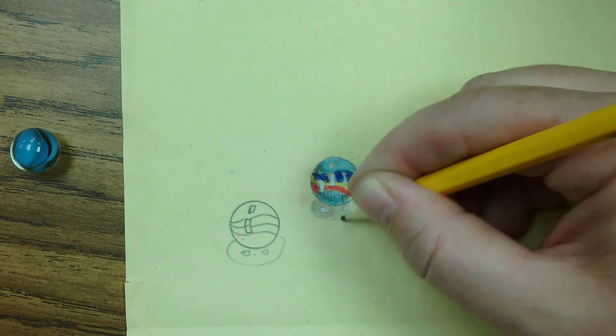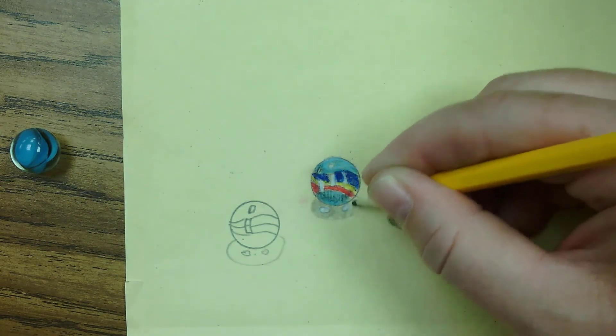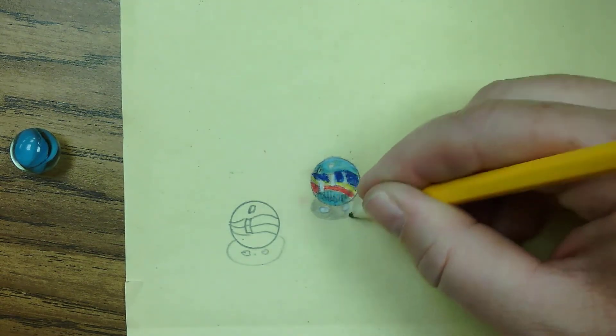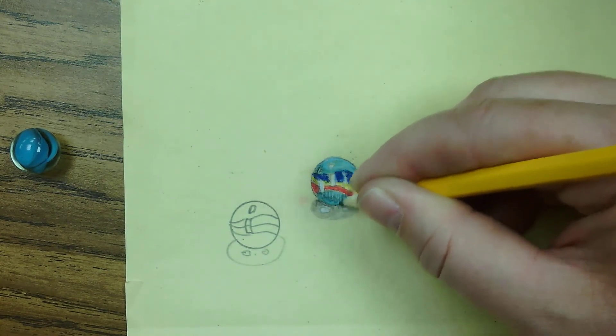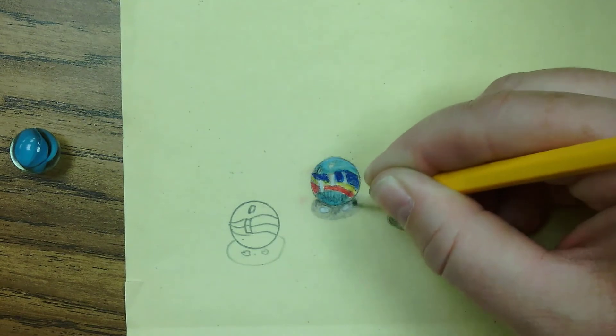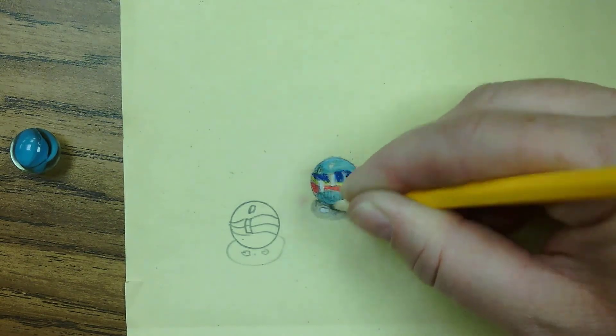Then lightly color in the cast shadow, being careful to color around the highlights. We're going to make it a little darker right underneath the marble, pressing down a little bit harder.